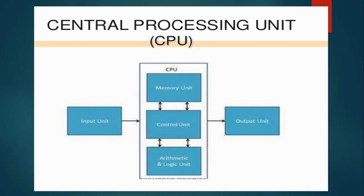What is the Central Processing Unit? The central processing unit is the most important part of a computer. It consists of three important units: the memory unit, the control unit, and the arithmetic logic unit. All mathematical calculations in the computer are performed with the help of the arithmetic logic unit. It is responsible for performing calculations, making comparisons, and processing data into information.